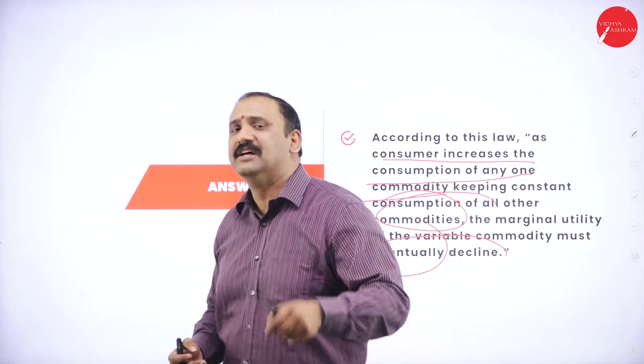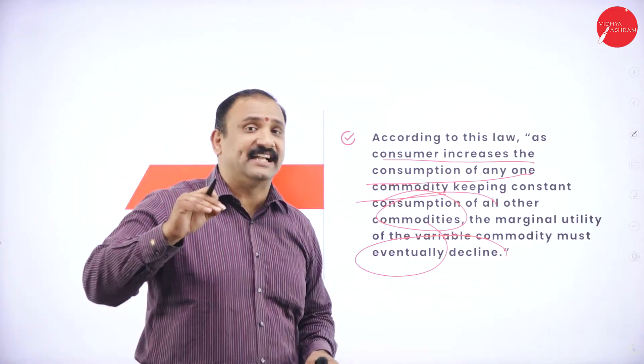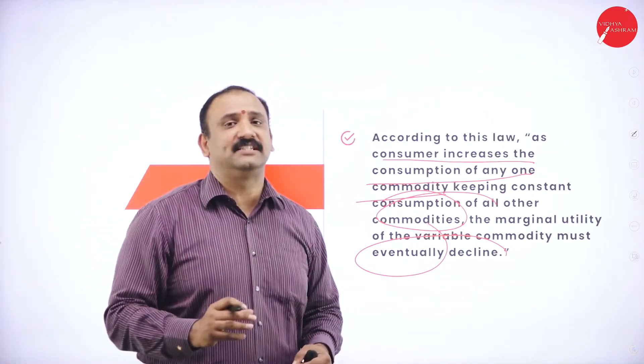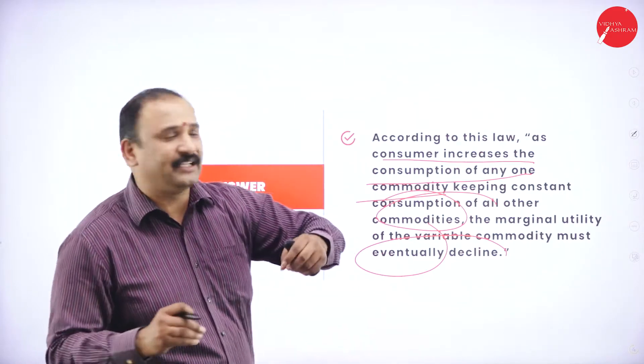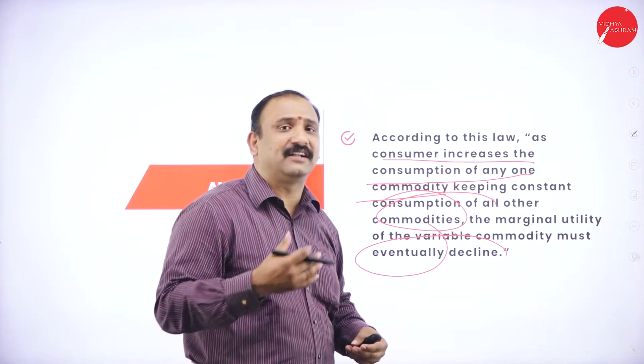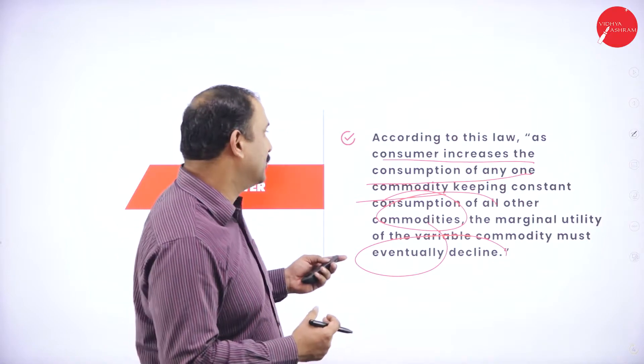What happens, even though I keep on getting more and more ice creams, the satisfaction out of that particular extra unit which I am consuming starts declining. That's exactly the law of diminishing marginal utility. The more you consume extra, the more the utility value starts coming down.